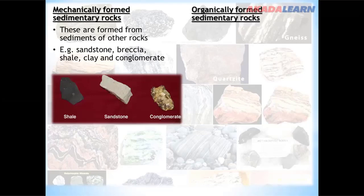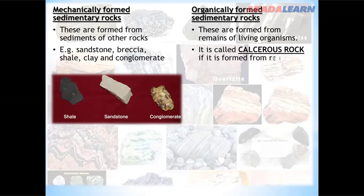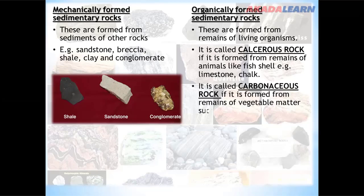Organically formed sedimentary rocks are formed from the remains of living organisms. They are called calcareous rock if formed from the remains of animals like fish shells — examples include limestone and chert. They can also be called carbonaceous rock if formed from the remains of vegetable matter such as forests and trees — examples include coal, peat, lignite, and petroleum.